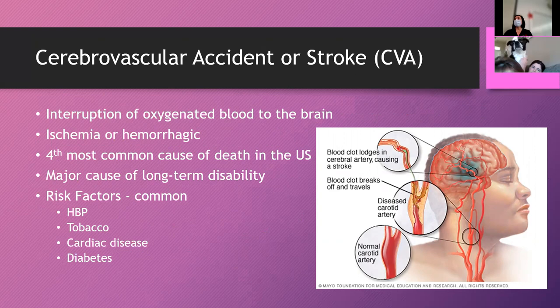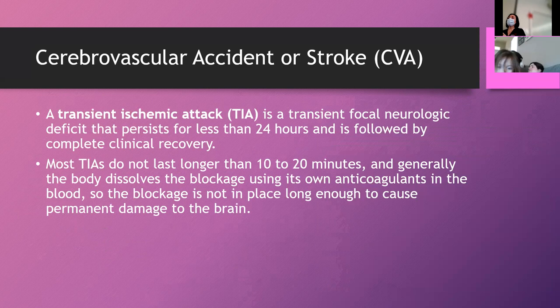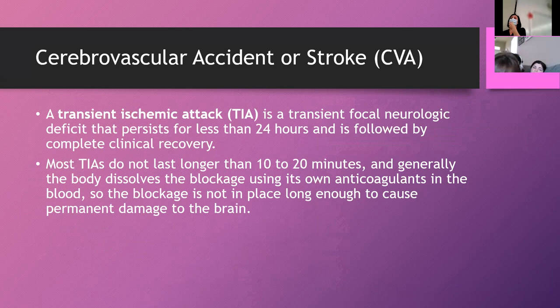Stroke, or cerebrovascular accident, is an interruption of oxygenated blood to the brain. It can be ischemic — a blockage — or hemorrhagic — a blood vessel burst causing pressure buildup in the brain. It is the fourth most common cause of death in the U.S. and a major cause of long-term disability. Risk factors include high blood pressure, tobacco, cardiac disease, and diabetes. TIAs (transient ischemic attacks) may indicate higher risk for a major stroke episode.